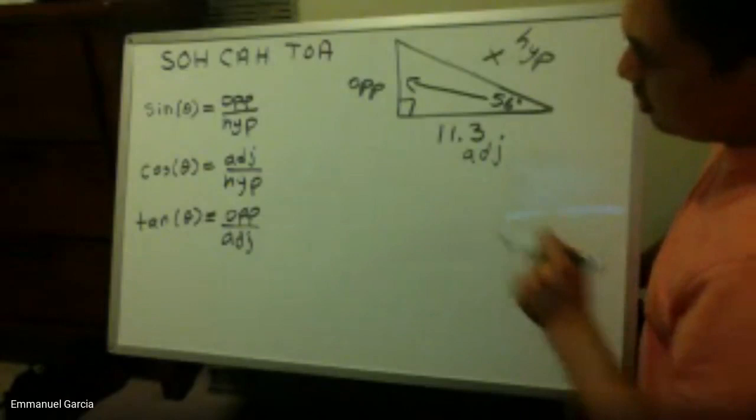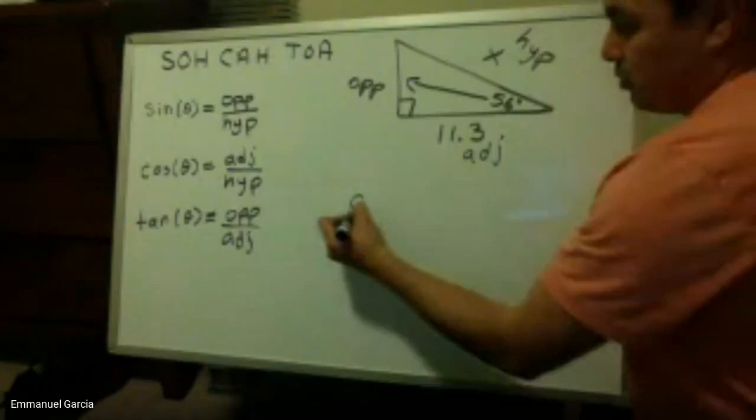If you look at my options, the trig function I'm going to be using is cosine, adjacent over hypotenuse. So that implies that cosine is the function I'm going to be using.